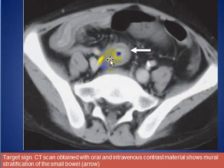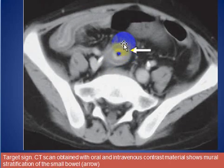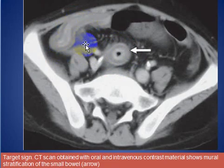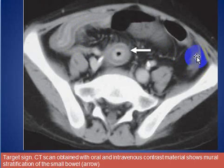Here is another patient with the target sign, obtained after intravenous contrast and water. We see the target sign here, thickening of the small bowel, and some stranding of the mesentery.